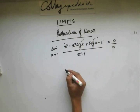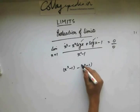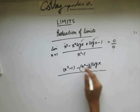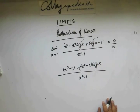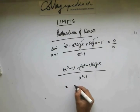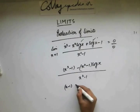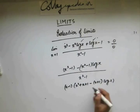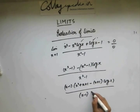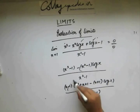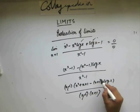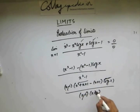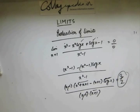Separating the log x part from the rest, then taking (x − 1) as a common factor, the common (x − 1) terms cancel. Putting x = 1, one factor becomes 0, leaving 3 in the numerator and 2 in the denominator. So the answer is 3/2.